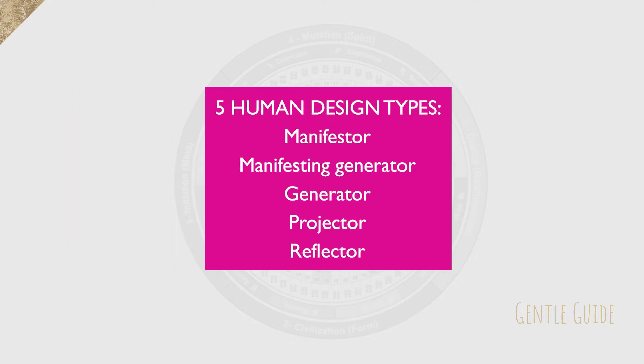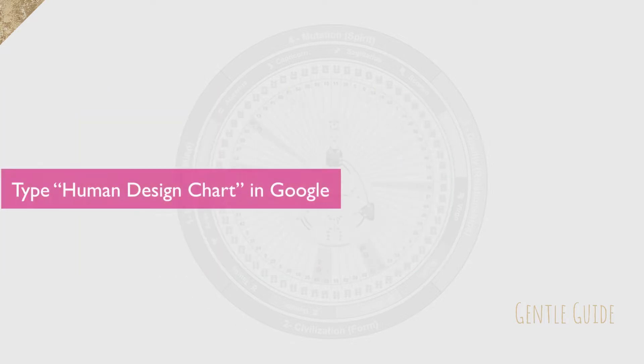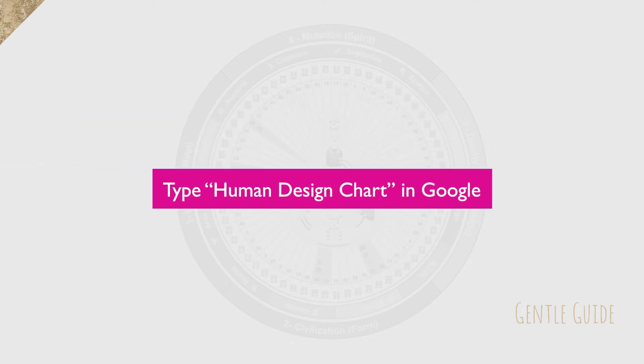If you want to check out other three types which are manifestors, manifesting generators and generators, I will put a link to that video in the description box below. If you're new to Human Design and don't have your chart ready, go and type Human Design chart in Google and just pause this video until you do so.